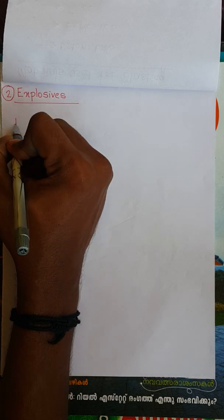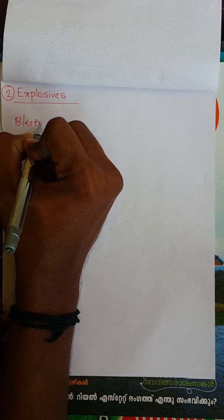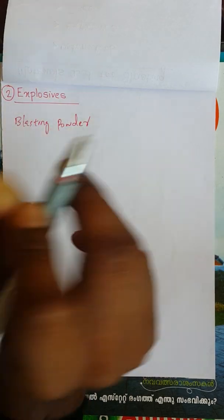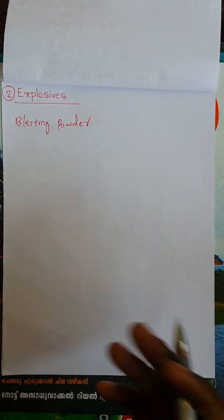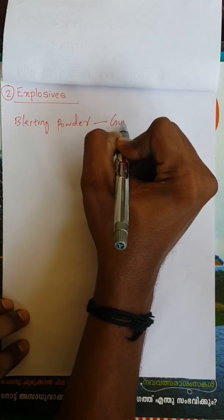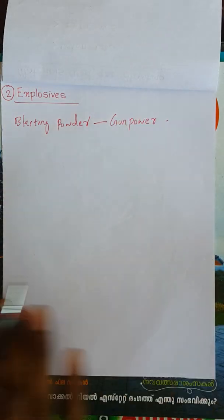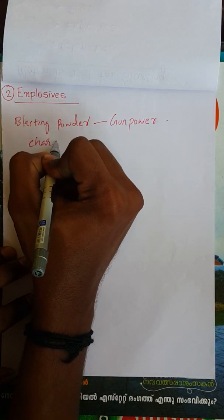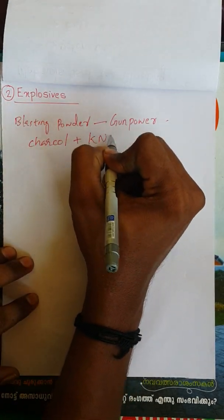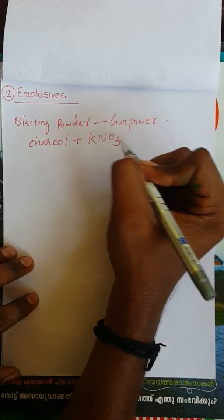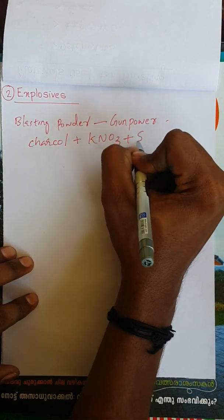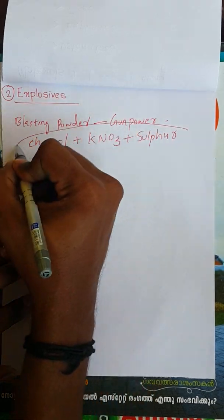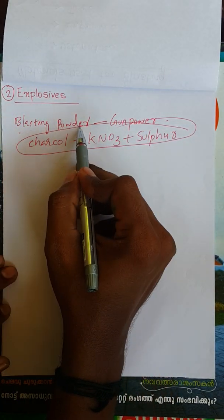Blasting powder has another name: gunpowder. We will use this combination: charcoal plus saltpeter (potassium nitrate) plus sulfur. This combination is blasting powder.